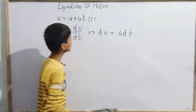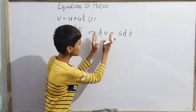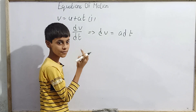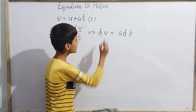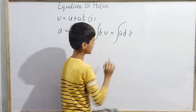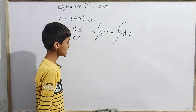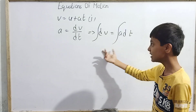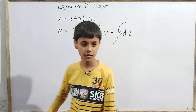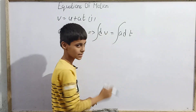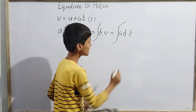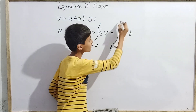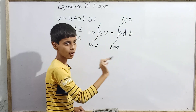Here dv represents a small part of velocity, so we need to integrate this function to get the value of v. We integrate both sides — the left side with respect to dv and the right side with respect to dt. We apply definite integration. At t equals 0, the velocity of the particle is u, and at time t, the velocity is v.